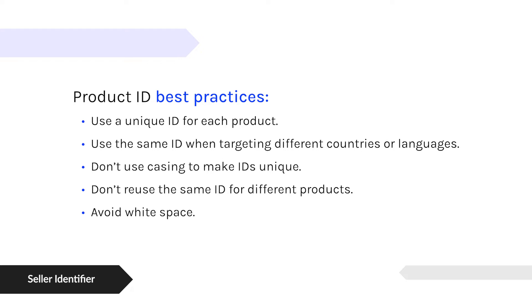It must be unique across your catalog. If you provide a SKU that's a duplicate and you have two different products with the same SKU, how are you going to track performance uniquely across those SKUs if those IDs are not unique?